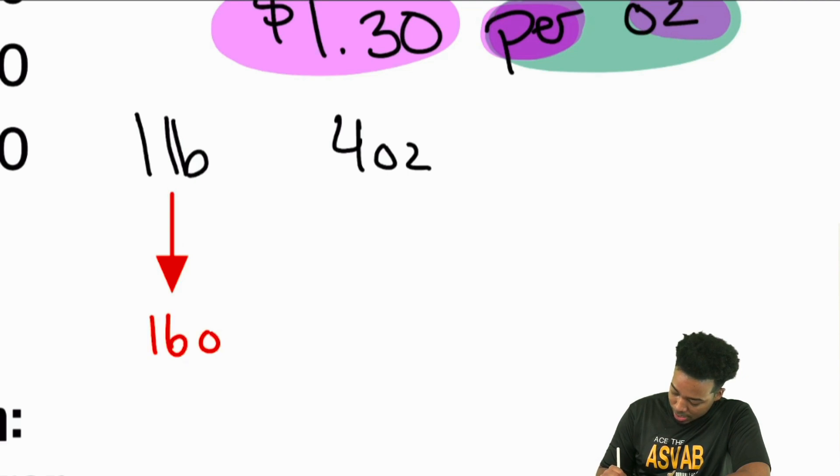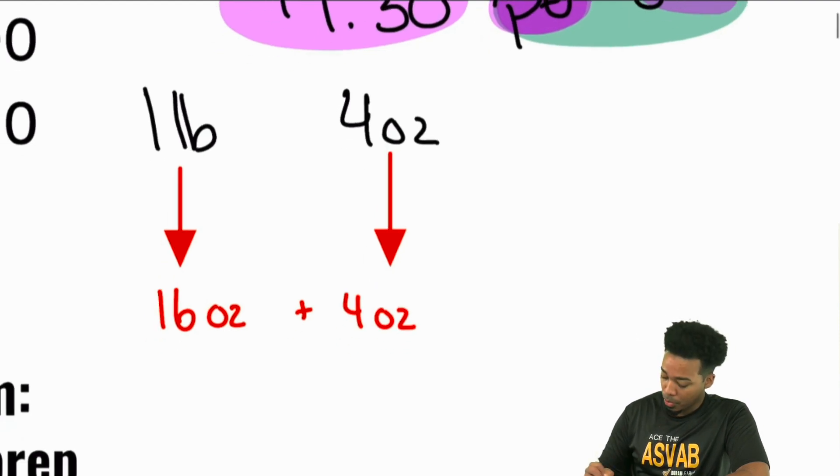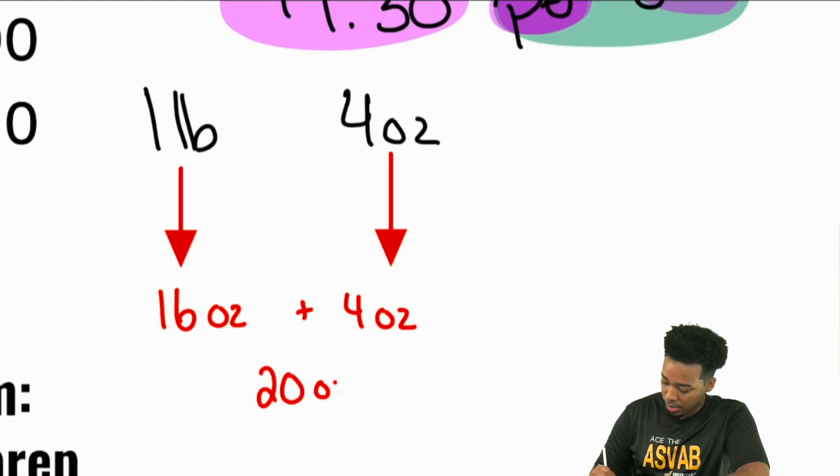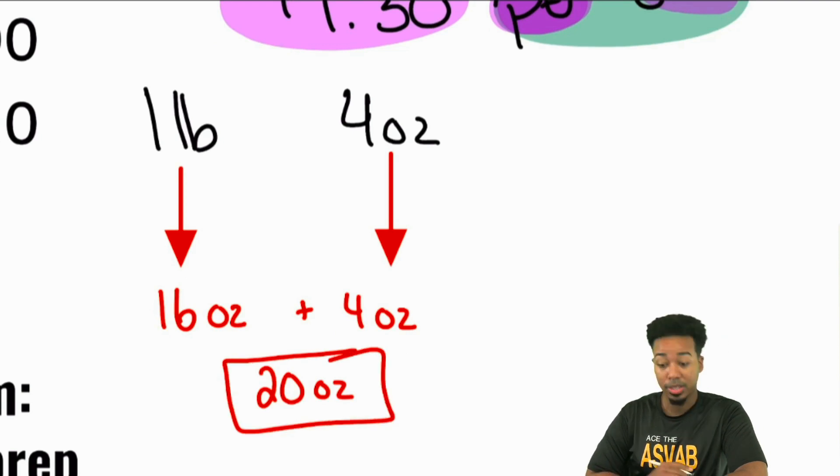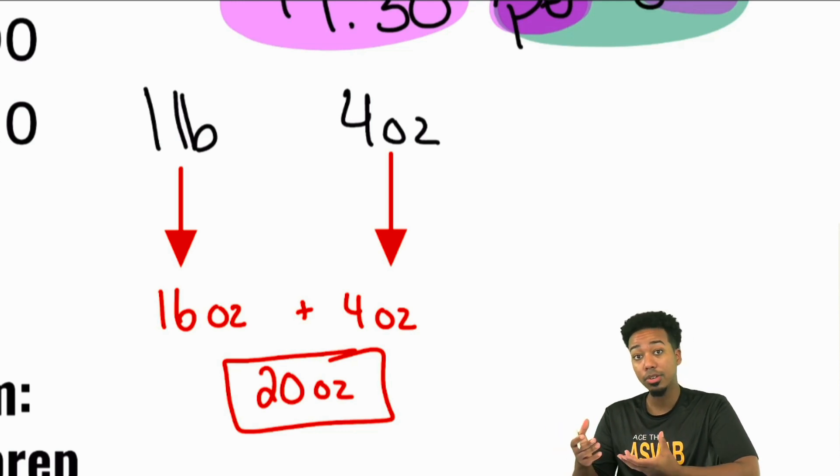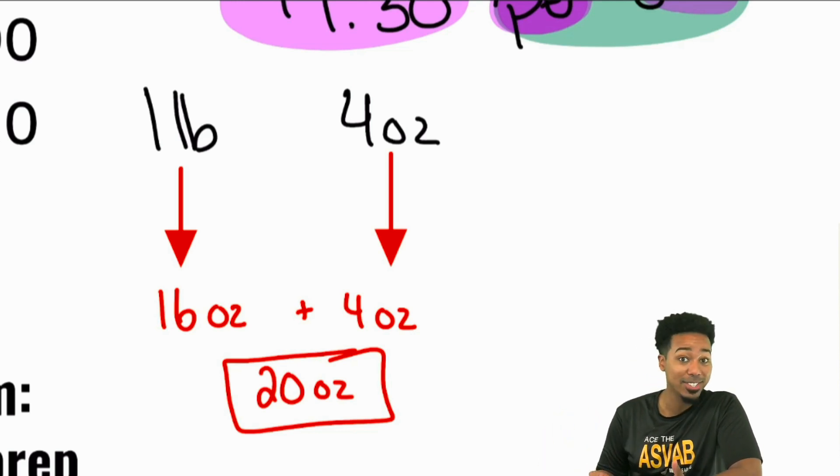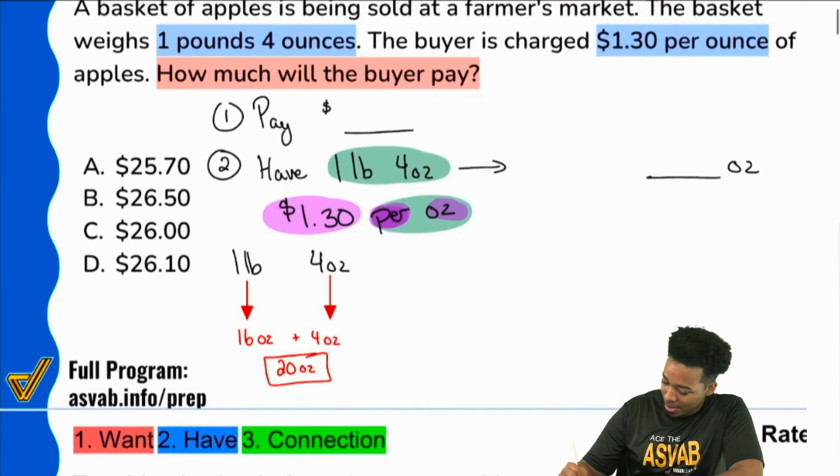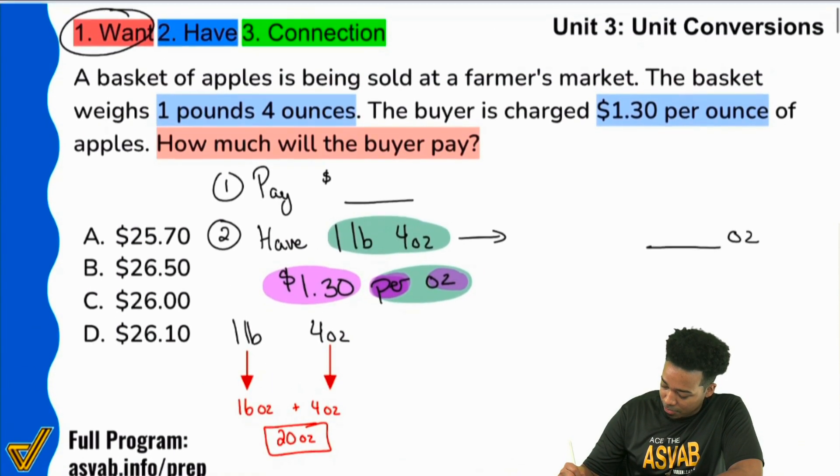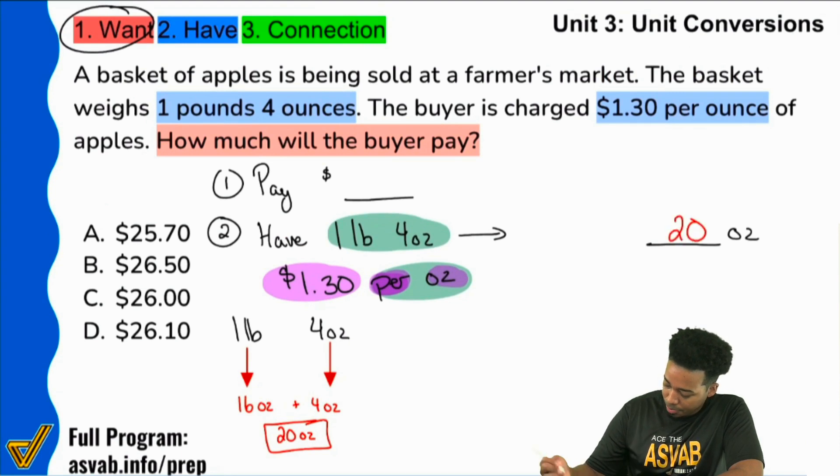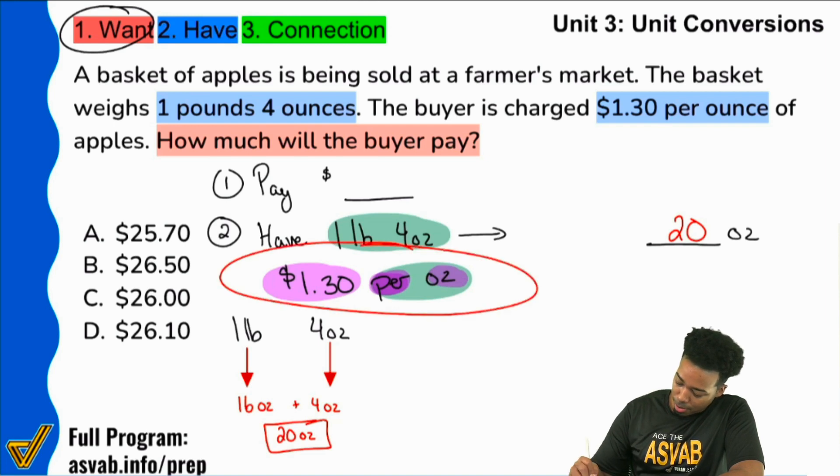So we can actually convert that pretty simple here. One pound is 16 ounces. We still have these four ounces over here. So how many total ounces do we have? We have a total of 20 ounces right there. So understanding how to convert is really important here because even if you knew that the word per means multiply, you still had to convert the units to make sure that you're good to go. So with that said, we come right back. We have a total of 20 ounces. Let me just fix this right up here. Great.